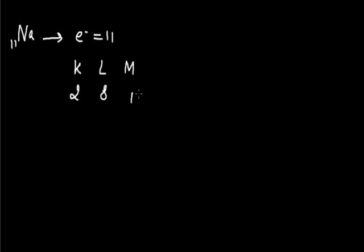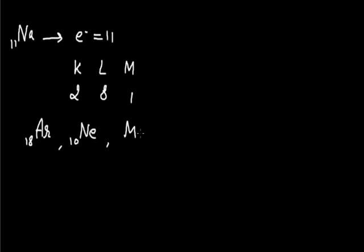That is how we write the electronic configuration of any element. For practice, you can write the configuration of argon with atomic number 18, neon with atomic number 10, and magnesium with atomic number 12.